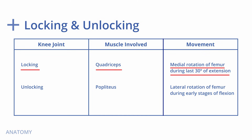To begin flexion, the locked knee must be unlocked. The unlocking of the knee joint is brought about by the action of the popliteus muscle. In unlocking, lateral rotation of the femur occurs on the tibia due to contraction of the popliteus muscle, and this unlocking occurs in the initial stages of flexion of the knee joint.